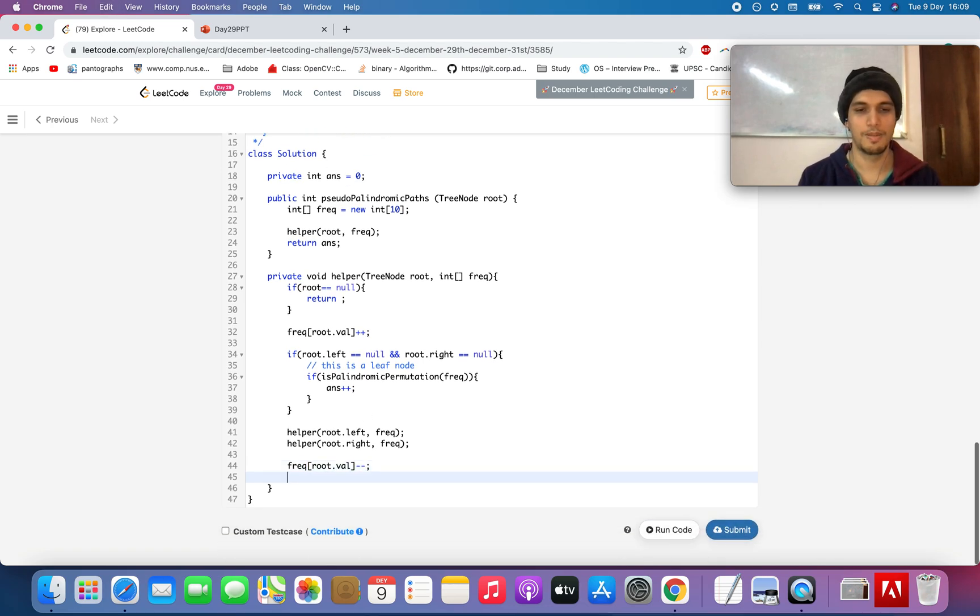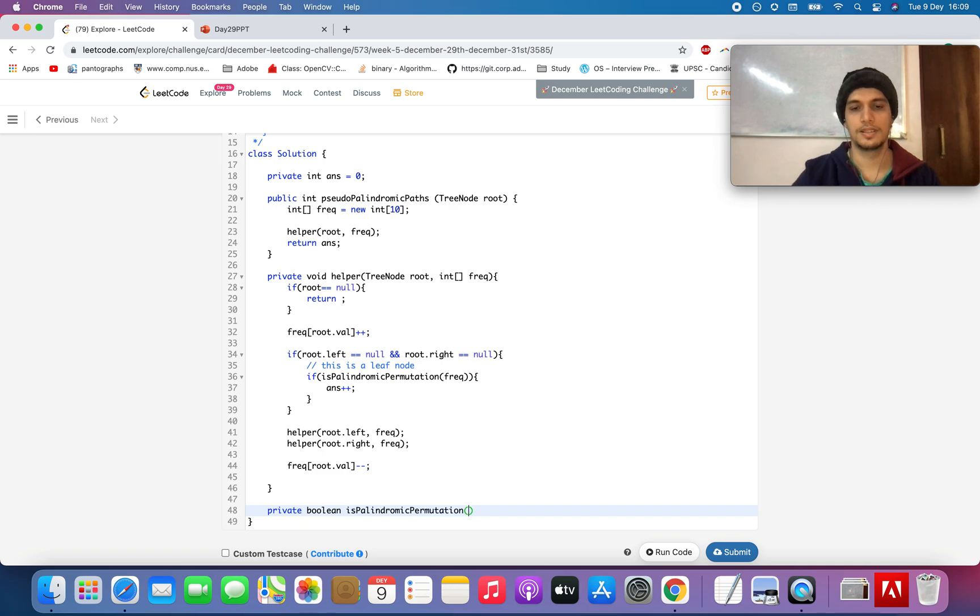And writing the helper method: isPalindromicPermutation. What it will have - it will have the frequency array, and we'll define a boolean oddFrequencyFound.